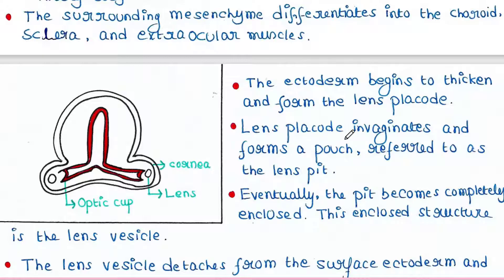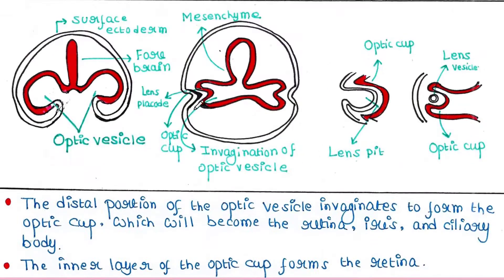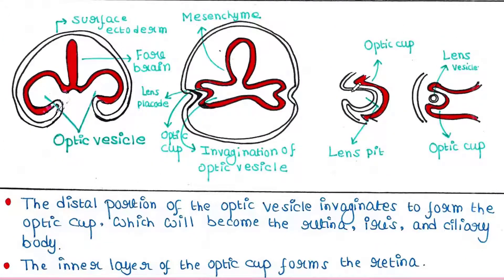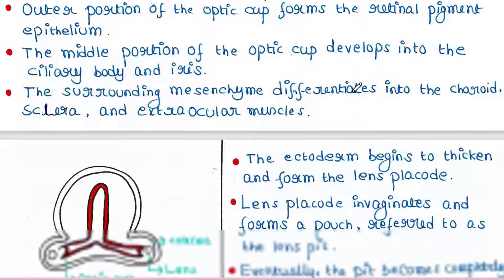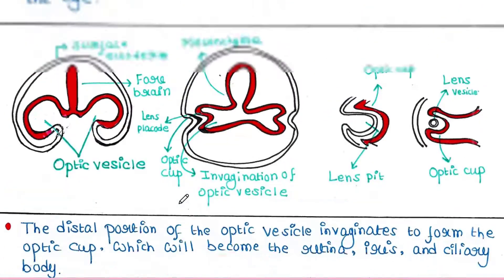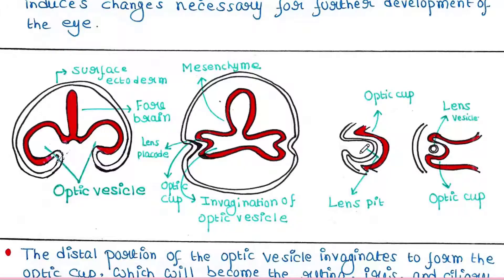The lens placode invaginates to form a pouch referred to as the lens pit. Eventually the pit becomes completely enclosed, and this enclosed structure is the lens vesicle. So from the lens pit, the lens vesicle is formed.